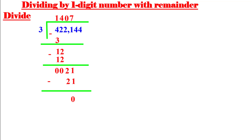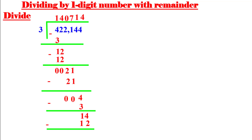Bring down 4: 4 divided by 3 equals 1, 1 times 3 equals 3, subtract to get remainder 1. Bring down last digit 4 to get 14: 14 divided by 3 — what number times 3 gives a number close to 14? It's 4, because 4 times 3 equals 12. If you try 5, 5 times 3 equals 15, which is greater than 14. So write 4, multiply to get 12, subtract: remainder is 2. The quotient is 140,714 with remainder 2.